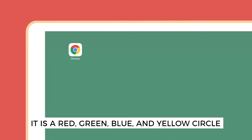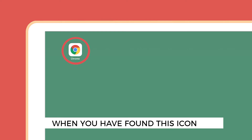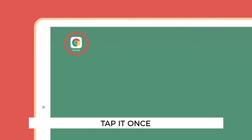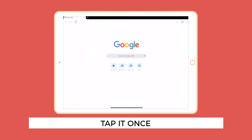The Google icon looks like this. It is a red, green, blue, and yellow circle. When you have found this icon on your tablet or phone, tap it once.